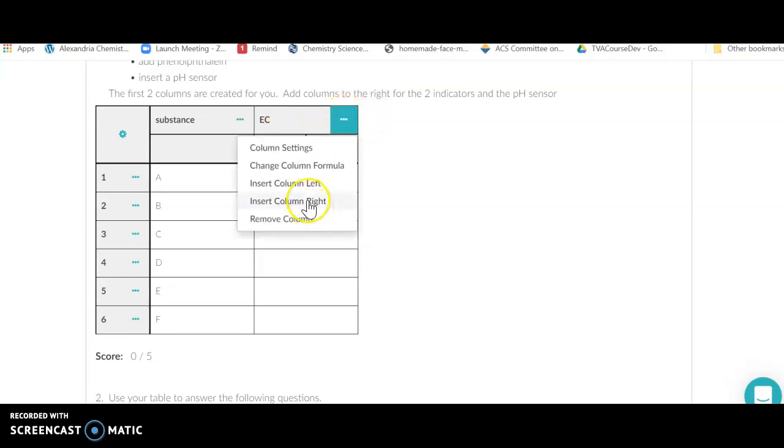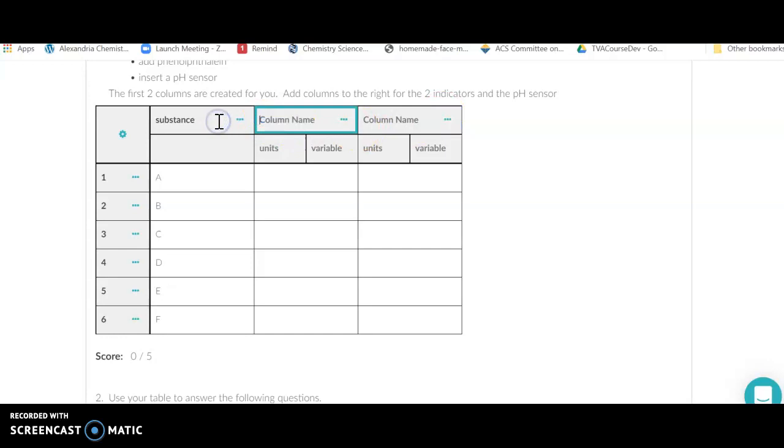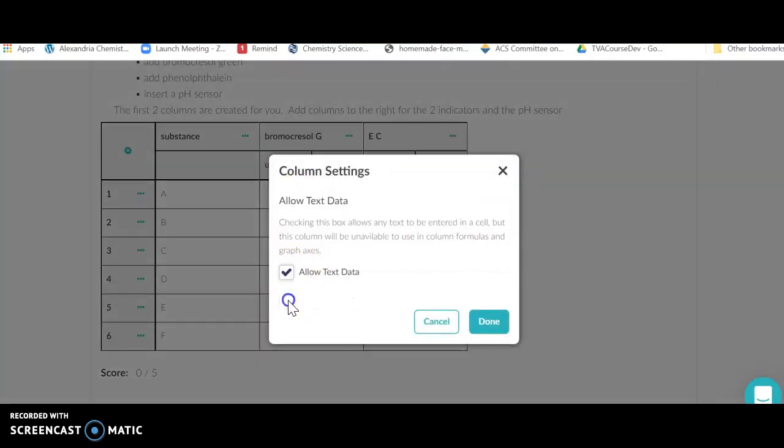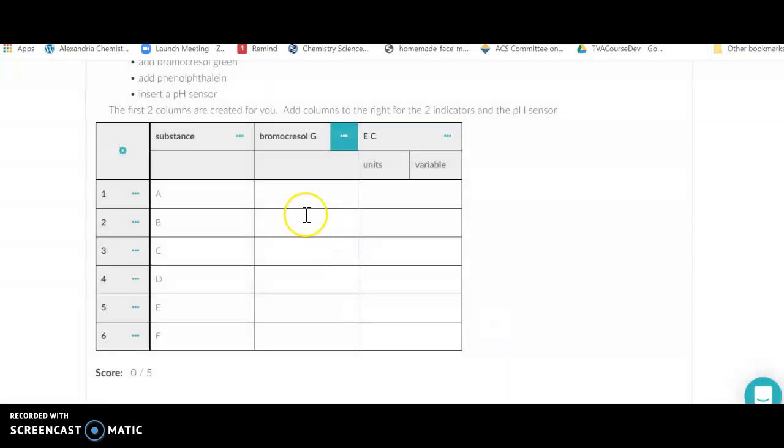For the first one here, I can add a column to the right and put what I need here. So if I put my bromocresol green here, on my next one I might put electrical conductivity, and I'm just going to put EC for that. We can put in the results as you see them. When you want to put a color, you can't type blue in, but you can if you go to these three dots, go to column settings, and go down to allow text data.